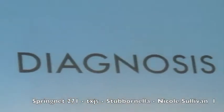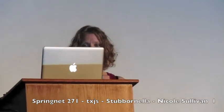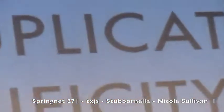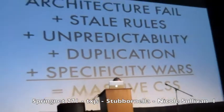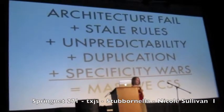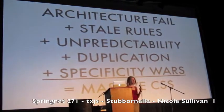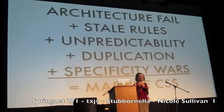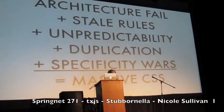Today I'm going to talk mainly about diagnosis — how to figure out what's wrong — because it's the more geeky, more interesting part. This is the rough equation I came up with: architecture fail plus stale rules plus unpredictability plus duplication plus specificity wars equals massive CSS. You don't even have to have all of these — if you have a few of them, you've got massive CSS most likely.